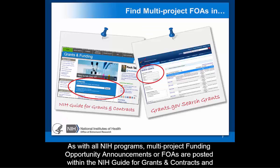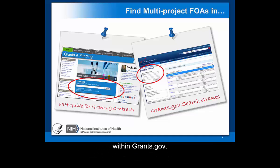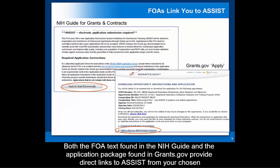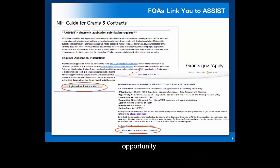As with all NIH programs, multi-project funding opportunity announcements, or FOAs, are posted within the NIH Guide for Grants and Contracts and within Grants.gov. Both the FOA text found in the NIH Guide and the application package found within Grants.gov provide direct links to ASSIST from your chosen opportunity.